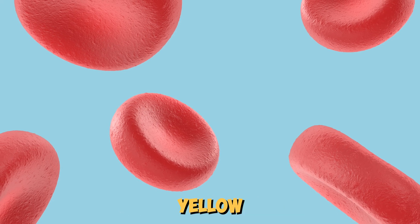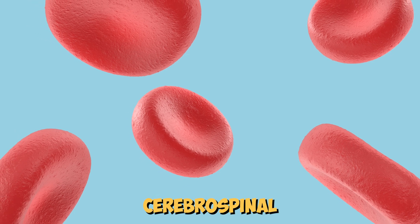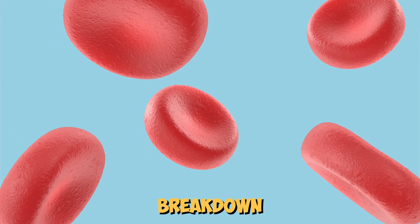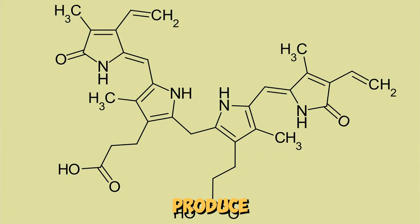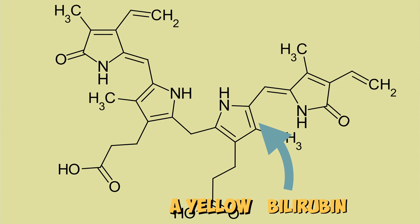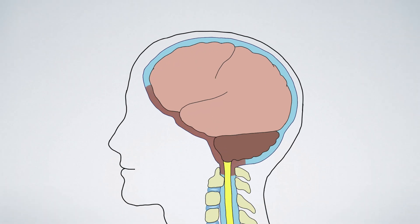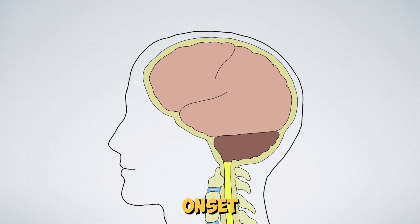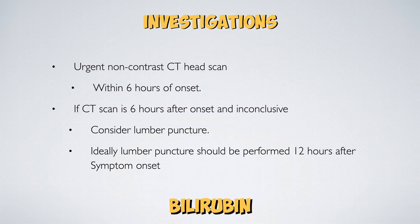Xanthochromia is a yellow discolouration of the cerebrospinal fluid, which is caused by the breakdown of red blood cells to produce bilirubin. The bilirubin gives the cerebrospinal fluid a yellow appearance. However, this process of red blood cell lysis can take at least 12 hours after symptom onset to produce enough bilirubin to cause xanthochromia.